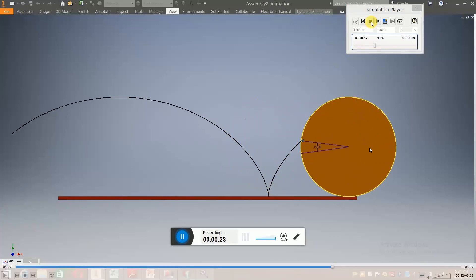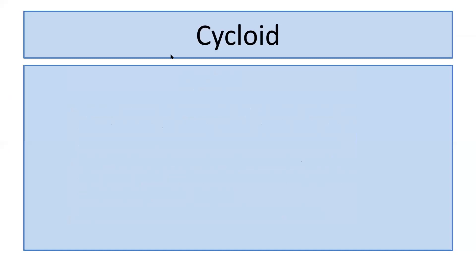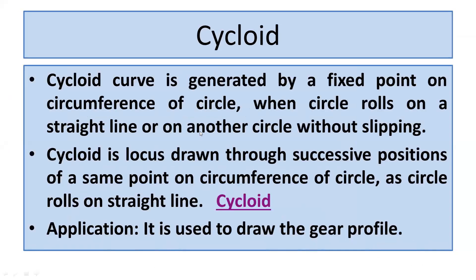We can draw this cycloid for one complete revolution of the circle or for two complete revolutions. The application of the cycloid curve is that it is used to draw the gear profiles. That means the gears which are used in machines or automobiles — their profile is generated with the help of cycloid curves.